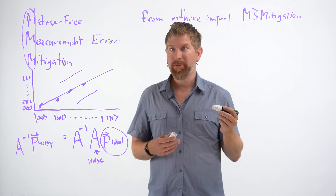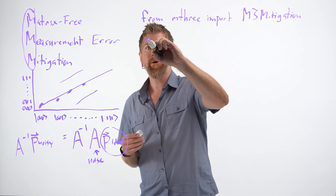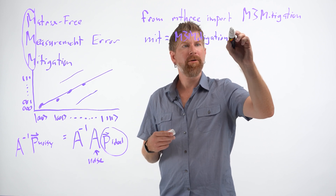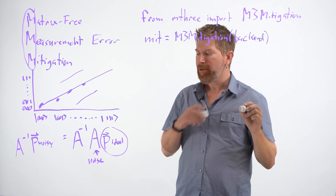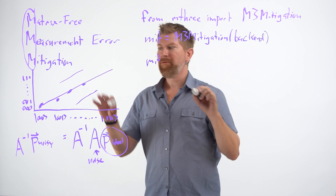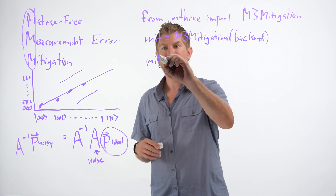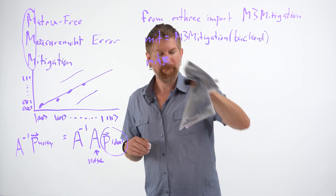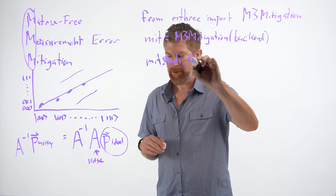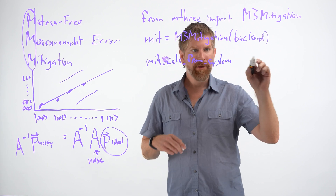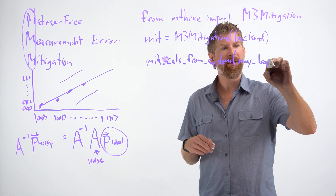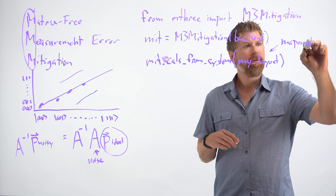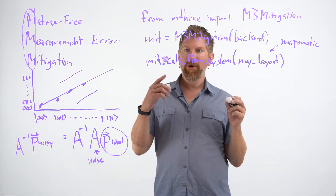We'll provide details in the description below. The first thing we need to do is instantiate our mitigation routine by building a class, Mitigation, and this will take our backend as an input. Then we want to find the qubits that we're actually doing the algorithm on, so we can say mit dot cals_from_system. The backend information is already there, but we need to tell it which qubits — so this will be my layout. These qubits could have been determined from perhaps our layout routine from, say, Map-O-Matic. Now we have our mitigation.